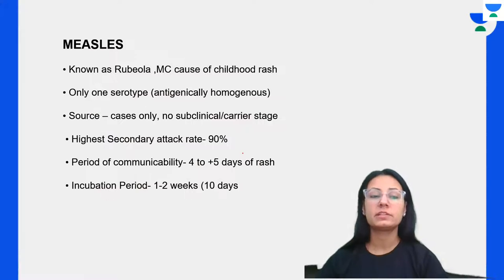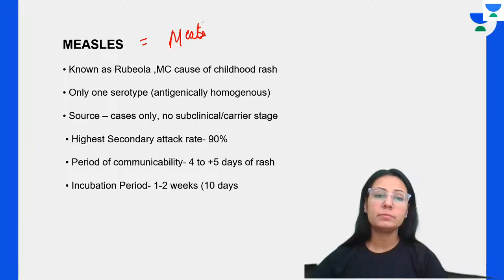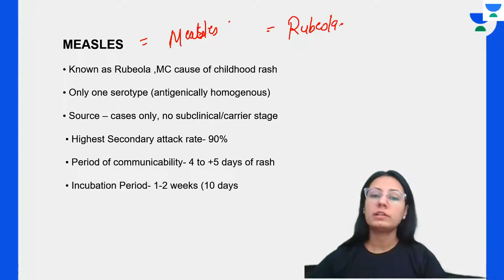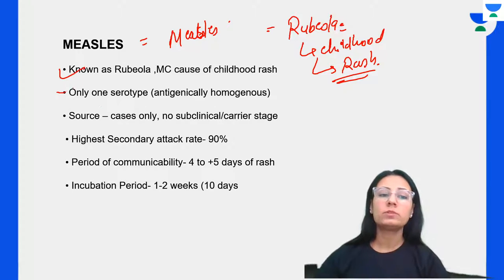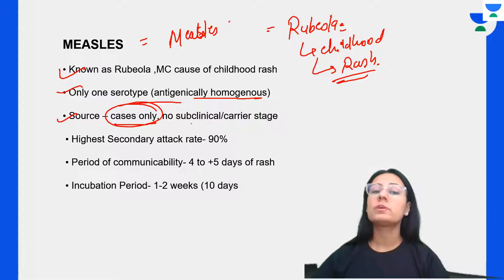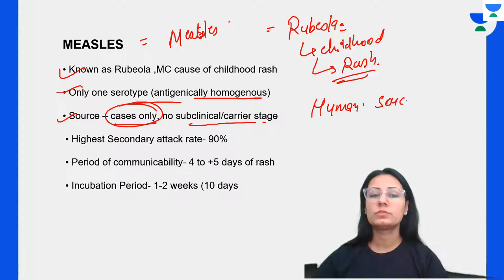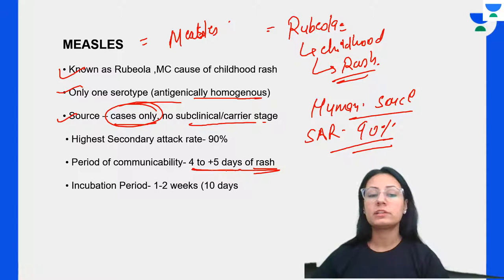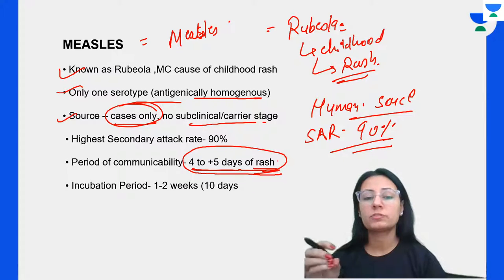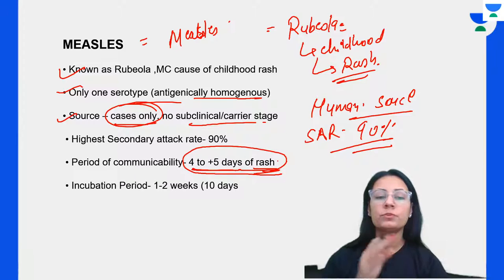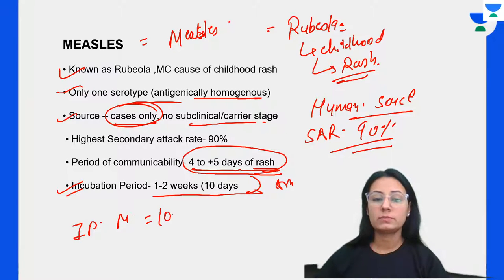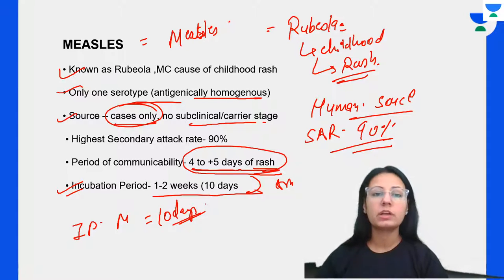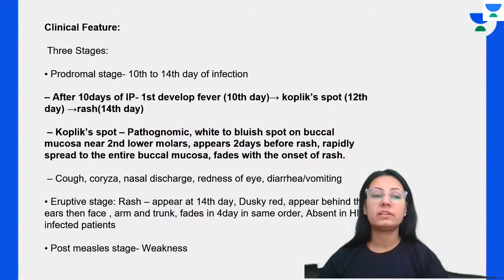This swollen parotid gland is bilaterally present in mumps. Next is measles, also known as rubeola — a childhood disease presenting with rash. Only one serotype — antigenically homogenous. No subclinical carrier stage. Humans are the only source. Secondary attack rate is high. Period of communicability is 4 days before to 5 days after the appearance of the rash. Incubation period is about 10 days.